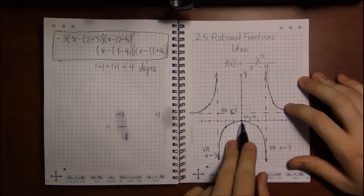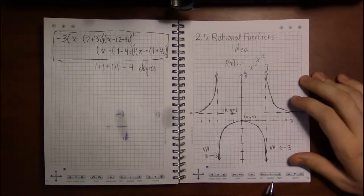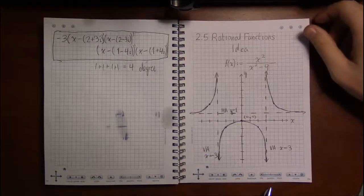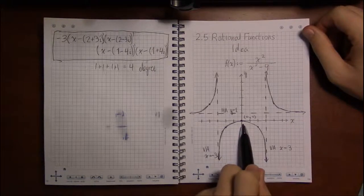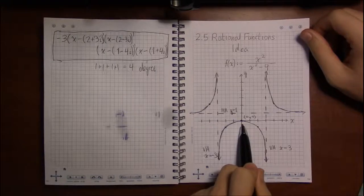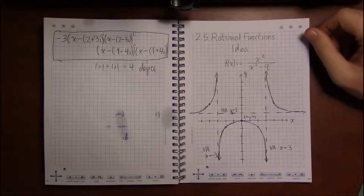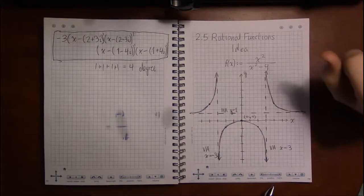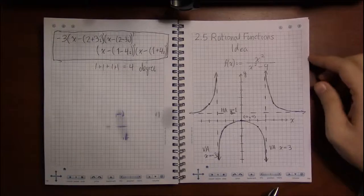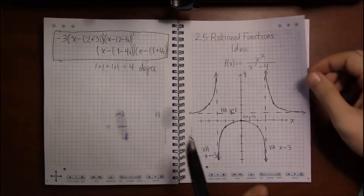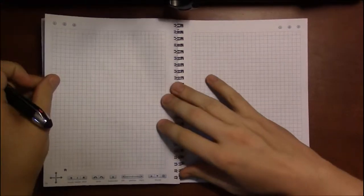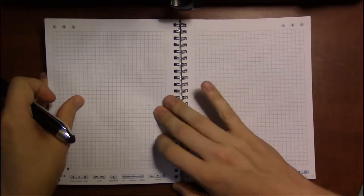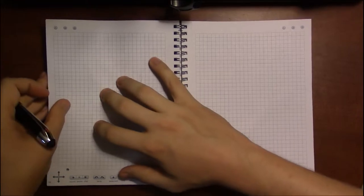We also have x and y-intercepts as well. Since x and y-intercepts are the easiest of these features of the graph, that's what we're going to look at first. X and y-intercepts stay exactly the same as they have been in previous sections.